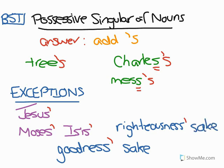So except for these small exceptions, you add an apostrophe-s when you want to form the possessive singular of nouns, regardless of whether the final consonant is an S or a regular letter. This has been a Bullis Student Tutor video. If you liked this video and found it helpful, please like, favorite, comment, and check out our other videos on our YouTube page. Thank you.